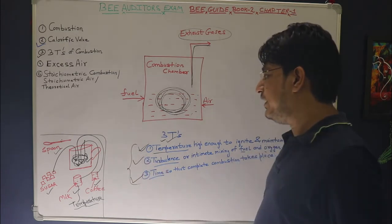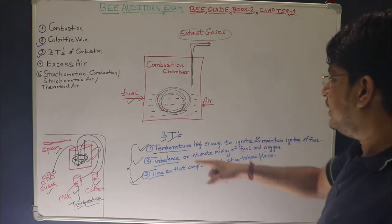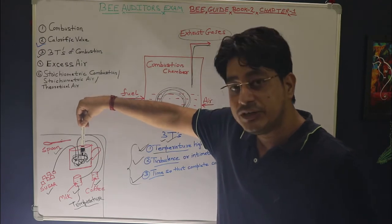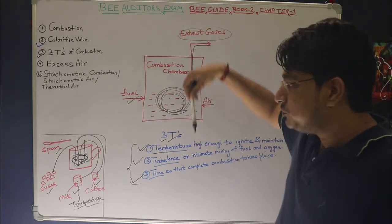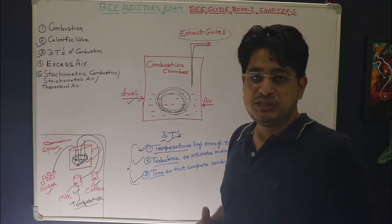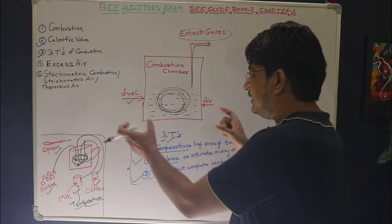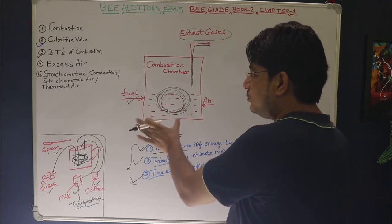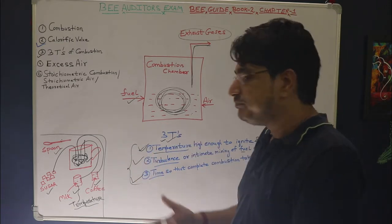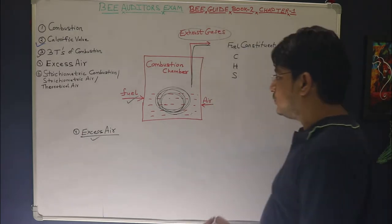So the fuel initially has to be heated up to a threshold temperature at which it catches fire — that is temperature. Then turbulence is required in the mixture so that the air and fuel can mix properly. Once this mixture has been agitated and proper mixing has taken place, we need to give it sufficient time so that all the reactions between fuel and air take place completely, and the proper amount of heat energy is released.